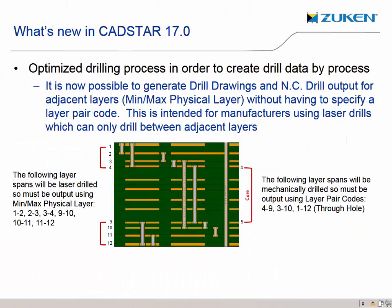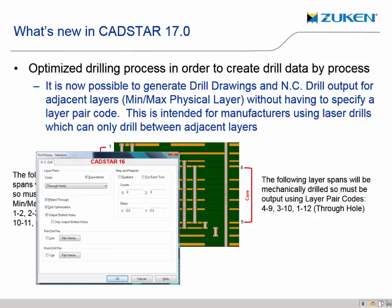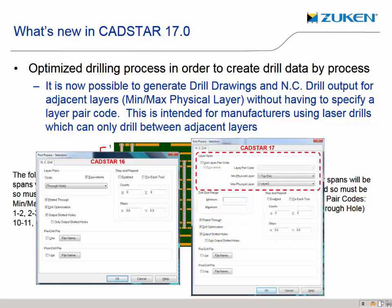It is now possible to generate drill drawings and NC drill output for adjacent layers without having to specify a layer pair code. This is intended for manufacturers using laser drills which can only drill between adjacent layers. In the case where there's a layer span of one to three defined and those holes are being laser drilled, the laser drill can only drill through adjacent layers, so vias using layer pair codes of one to three need to appear in the drill output for layers one to two and two to three. Users achieve this by unticking 'use layer pair code' then generating the drill output. It is also now possible to specify a drill size range to limit which vias will be processed in the NC output selections setup dialog.